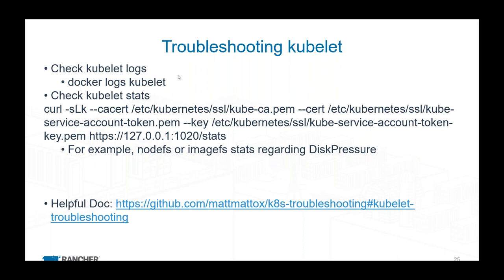The other big one — and this is usually when you see a node acting up — is Kubelet. Think of Kubelet as the agent for the node as far as Kubernetes is concerned. If Kubelet is down, that node is effectively down as far as Kubernetes is concerned. The node could still be up, still have apps running, could still be processing data — but as far as Kubernetes is concerned, it's dead.